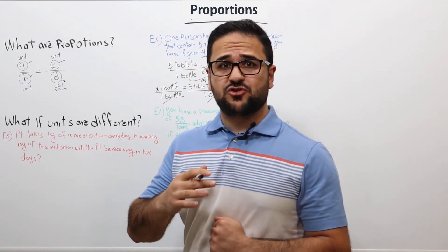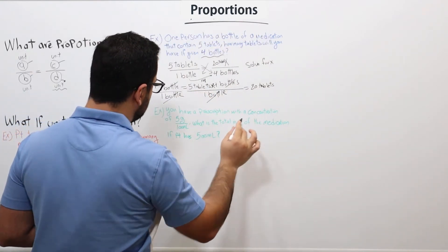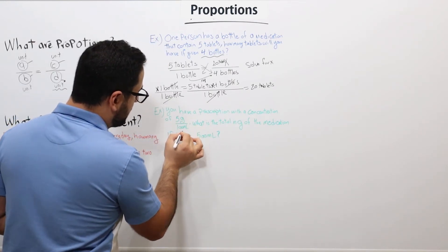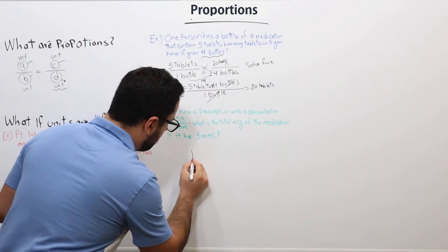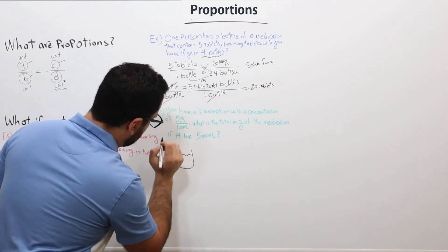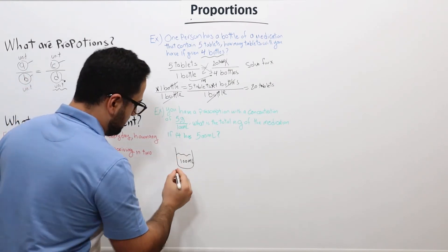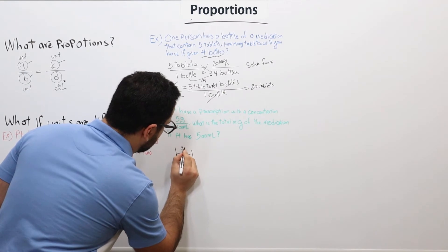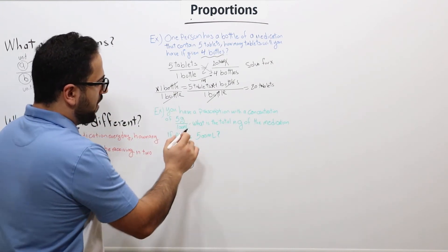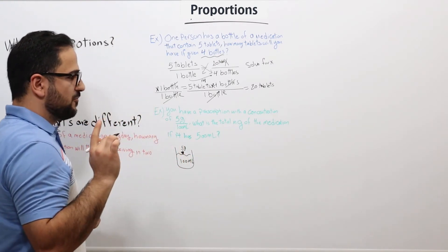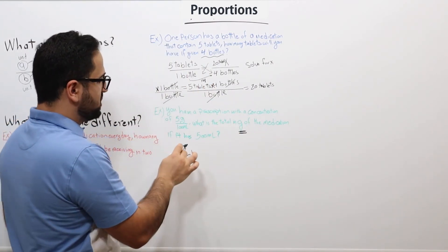Let's move on to a second example. You have a prescription with a concentration of five grams per 100 ml. Think of it as a bottle containing 100 ml with five grams of medication inside. What is the total amount in grams of the medication if the patient has 500 ml?